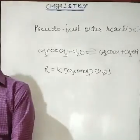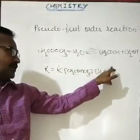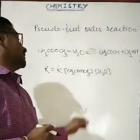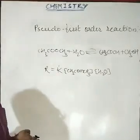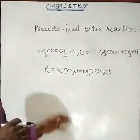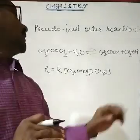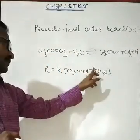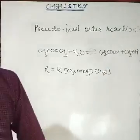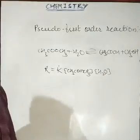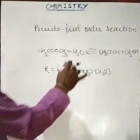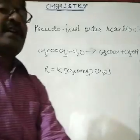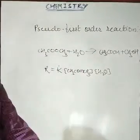This reaction is expected to be second order — power 1 for methyl acetate and power 1 for water, so it appears second order. But actually this reaction obeys first order kinetics. The rate expression shows it is first order. Why does this reaction follow first order kinetics?